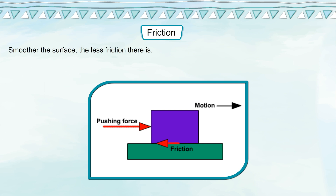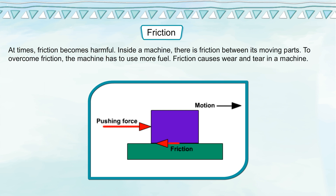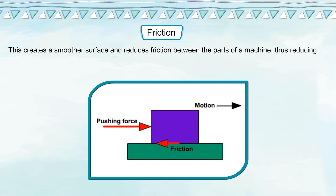Smoother the surface, the less friction there is. At times, friction becomes harmful. Inside a machine, there is friction between its moving parts. To overcome friction, the machine has to use more fuel. Friction causes wear and tear in a machine. Friction in machinery can be reduced by adding lubricants such as oil. This creates a smoother surface and reduces friction between the parts of a machine, thus reducing the amount of wear and tear as well.